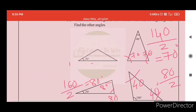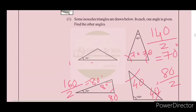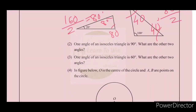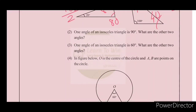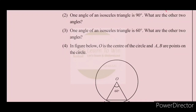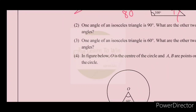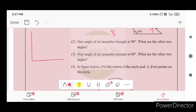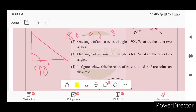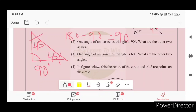An isosceles triangle has one angle of 90 degrees. What are the other two angles? One angle is 100 degrees — wait, one angle is 90 degrees. 180 minus 90 equals 90 degrees, divided by 2. The other two angles are each 45 degrees.